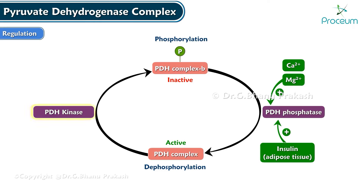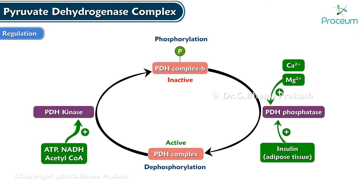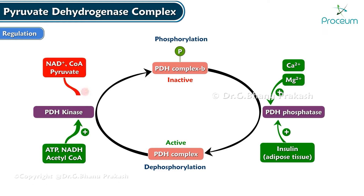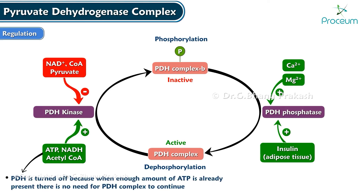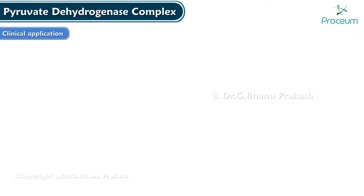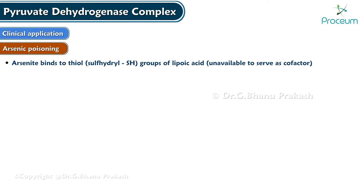PDH kinase, which is responsible for the inactive PDH, is promoted by ATP, NADH, and acetyl coenzyme A, while it is inhibited by NAD⁺, coenzyme A, and pyruvate. The net result is that in the presence of high energy molecules like ATP and NADH, the pyruvate dehydrogenase complex is turned off, because when enough energy is already present, there is no need for the PDH complex to continue.